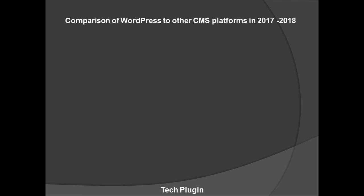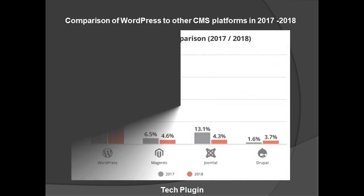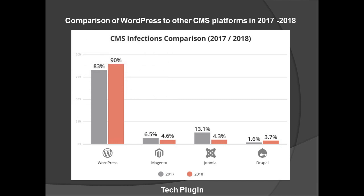Let's see the comparison of WordPress to other CMS platforms. In 2017–2018, there were many CMS platforms like Magento, Joomla, Drupal, OpenCart, PrestaShop, and more. WordPress has about 90 percent of the market, while Magento is at 4.6 percent, Joomla at 4.3, and Drupal at 3.7. In 2017 it was 83 percent and by 2018 it reached 90 percent — all others are far behind.